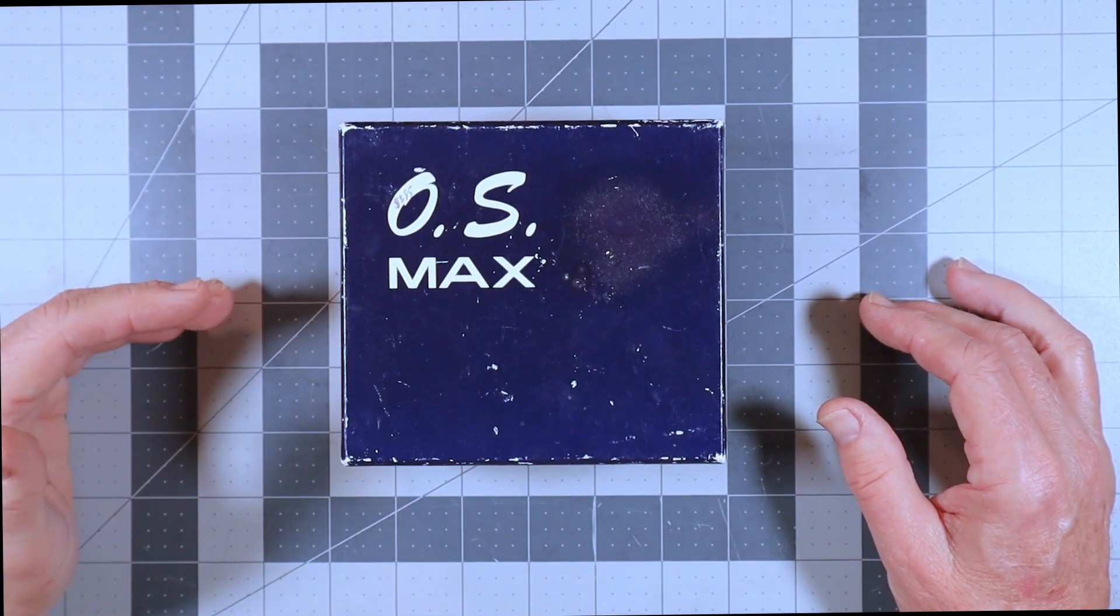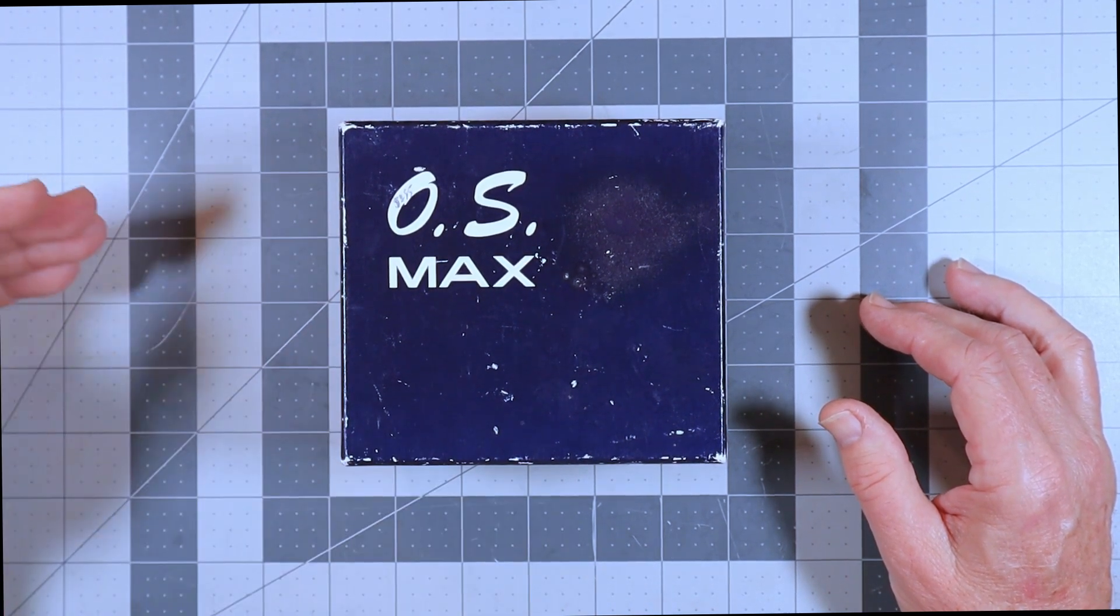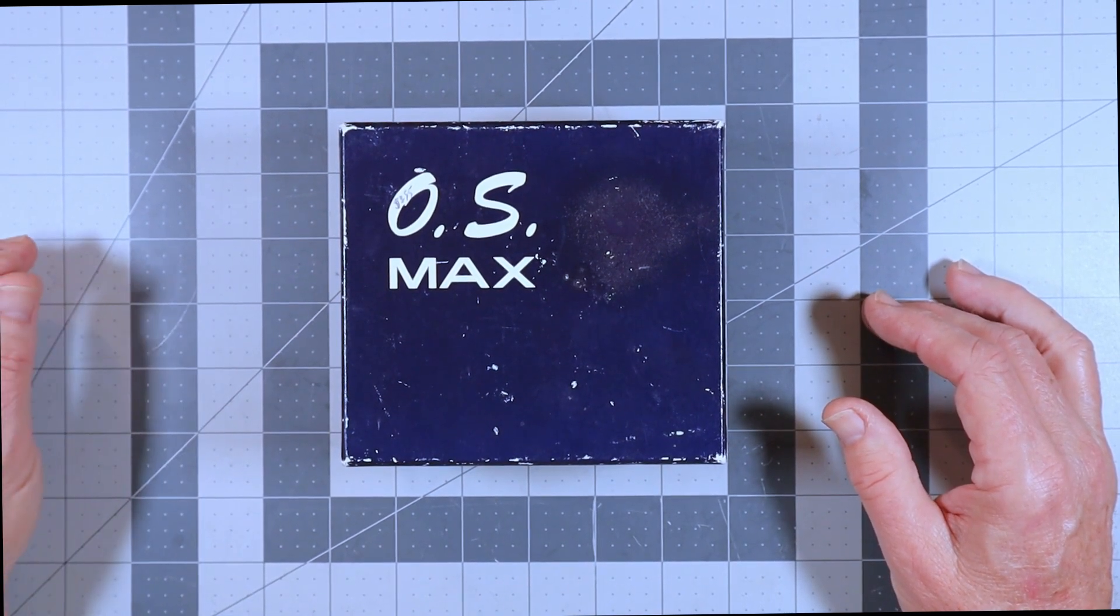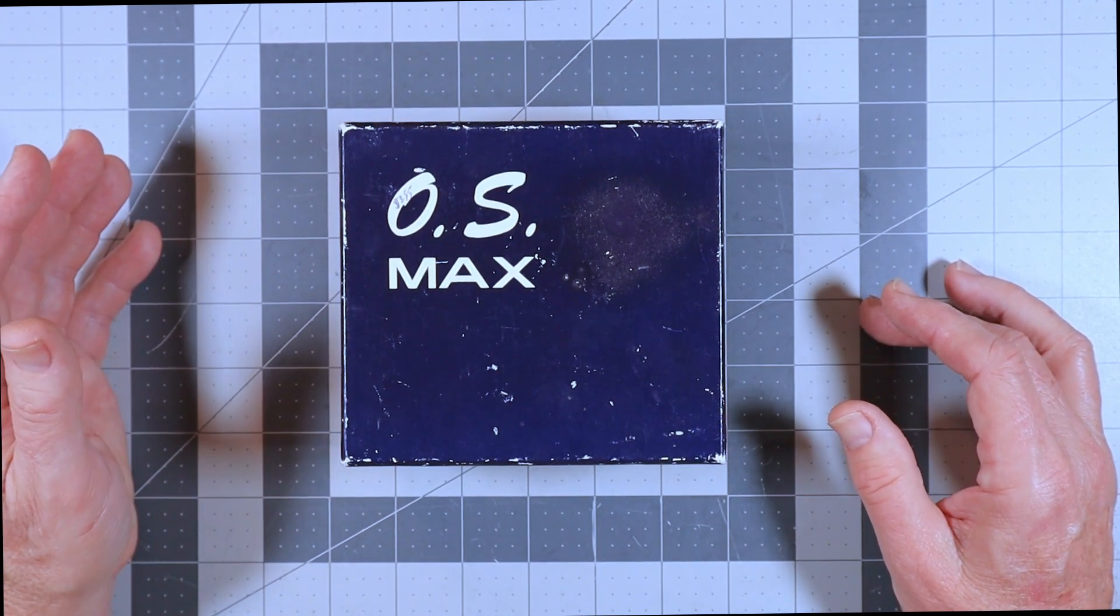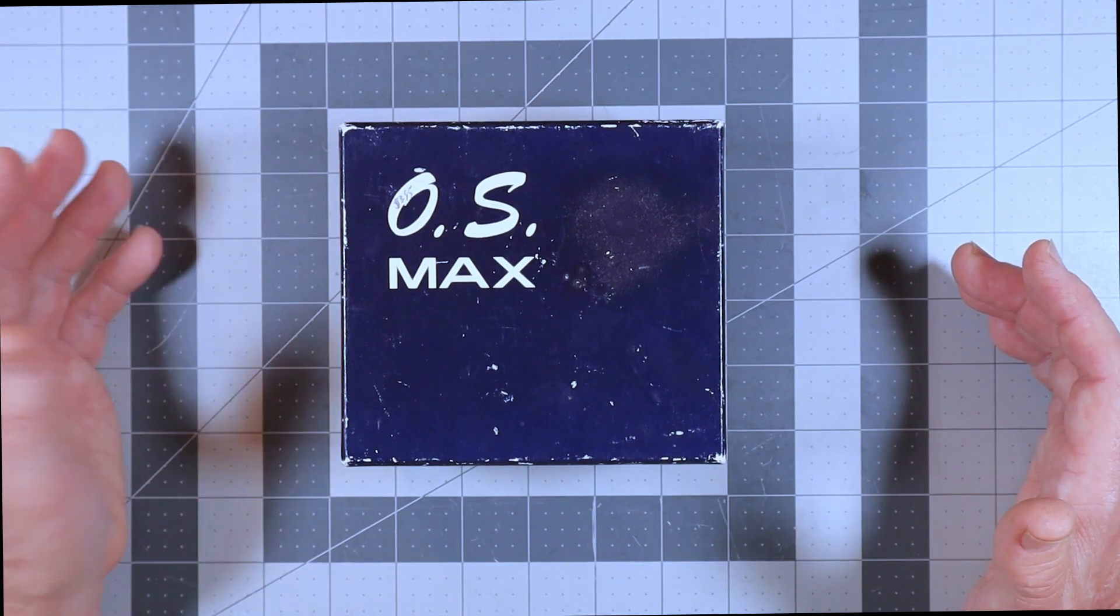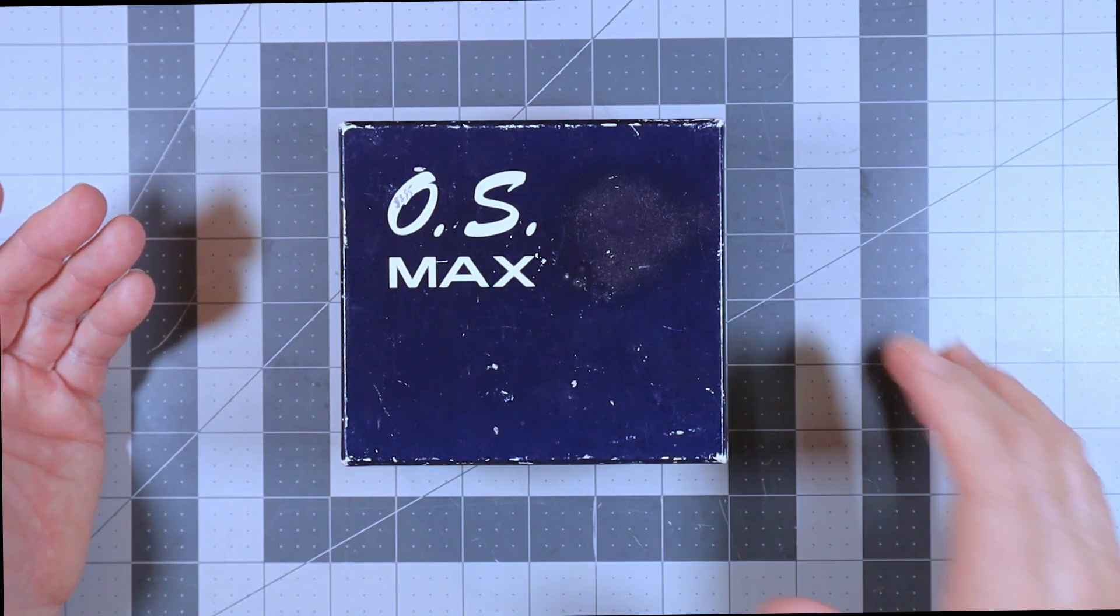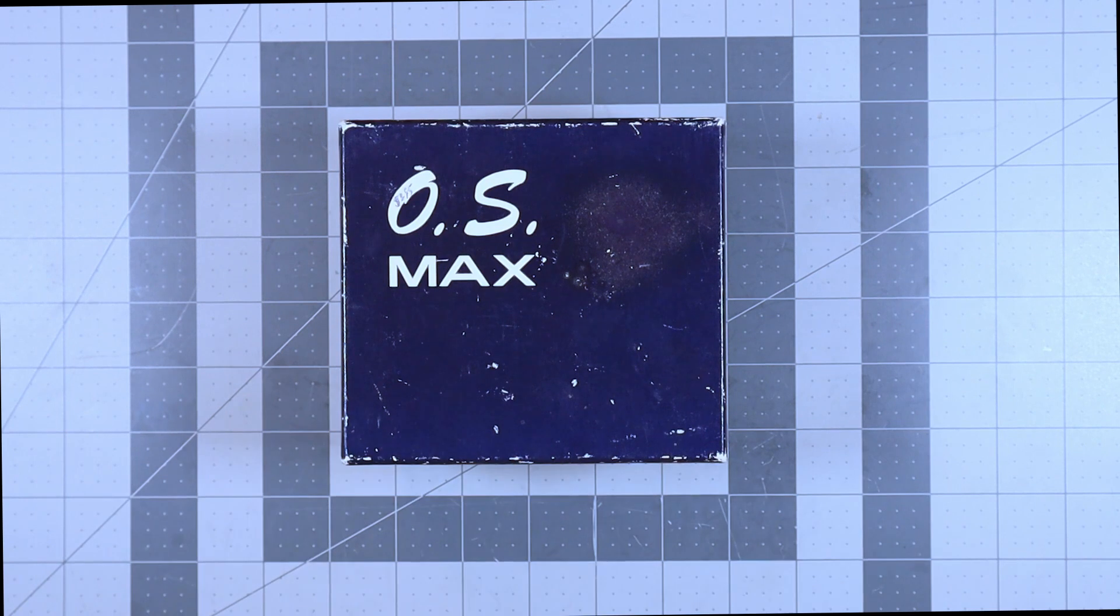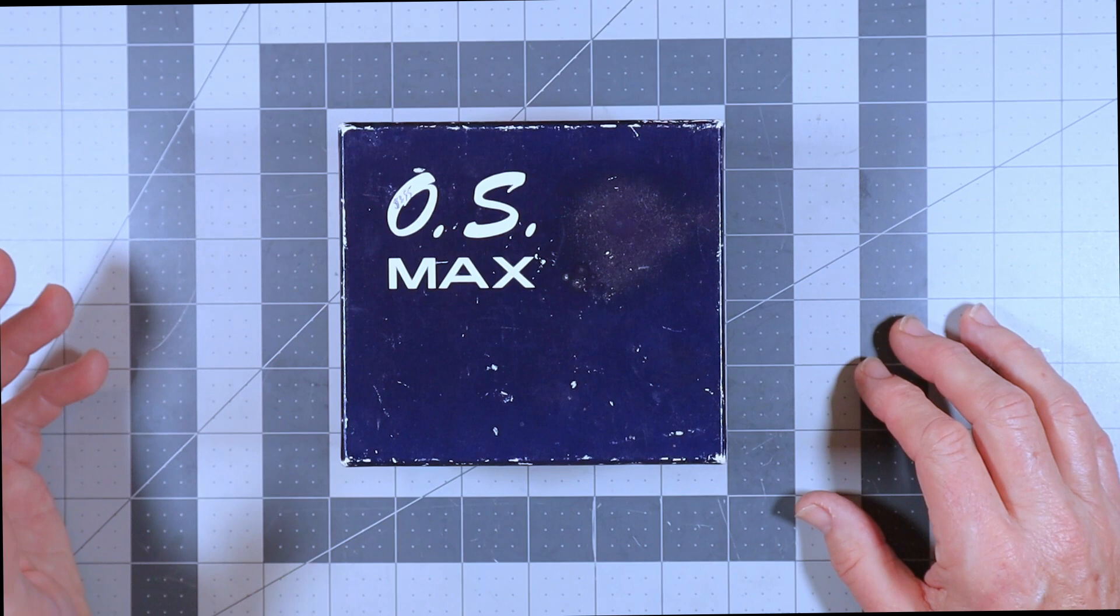He immediately relisted it. So then I made another offer within about forty-eight hours of the end of the second auction and waited for a few hours and nothing happened. Then it got down to the last four hours of the auction and I sent the guy a message saying, you've got this ad set up as make offer auction, obviously nobody's bidding on it and you're not responding to my offer so what gives? Well about ten to fifteen minutes later I get an email saying your offer was accepted. So I guess I coerced him into selling it.